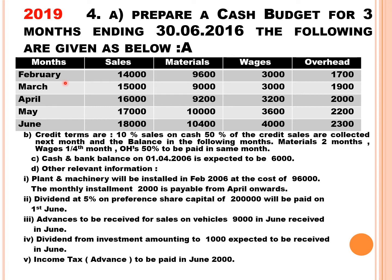Sales is treated as a receipt, along with material payment, wages payment, and overheads payment. The credit terms are: 10% of sales are on cash, so 90% is on credit. Of the 90% credit sales, 50% will be collected in the next month and the remaining 50% in the following month.